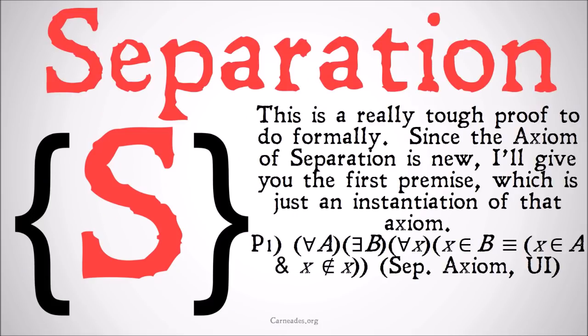This is a really tough proof to do formally. Since the Axiom of Separation is new and we haven't really practiced with instantiating schemas, I'll give you the first premise, which is just an instantiation of that axiom as the Ordinary Set Theorem. Let's take a look at how we're instantiating this, just to get a sense of what mechanically is going on. The goal is to help you understand, if you're seeing a long complicated proof that does this line by line, what they're really talking about.